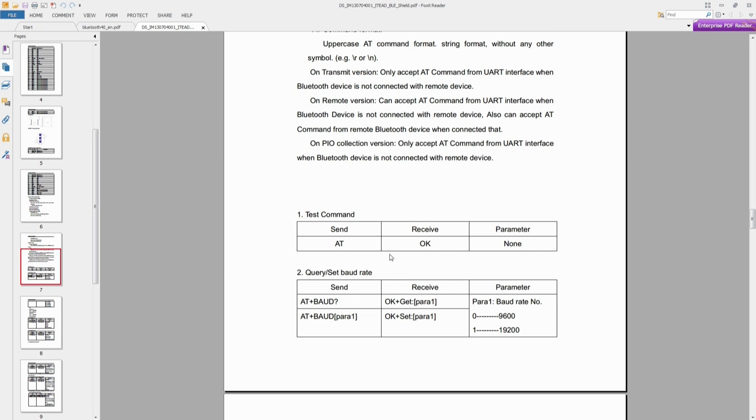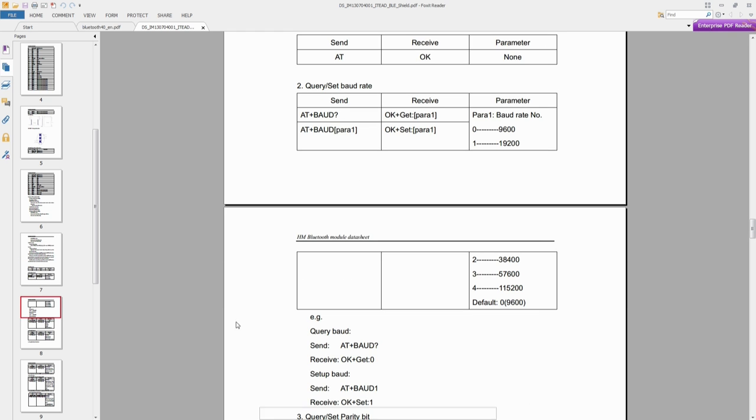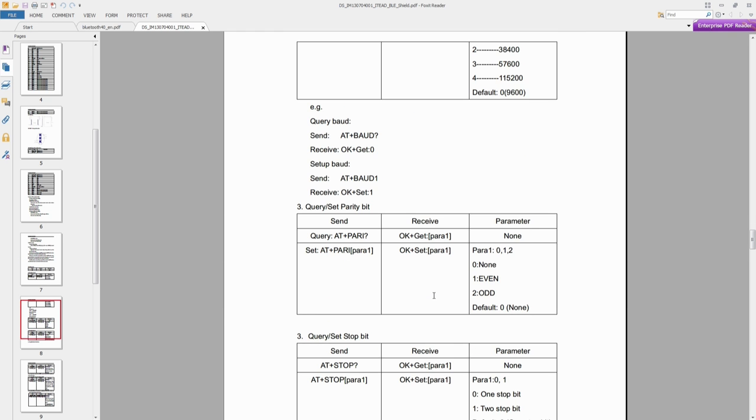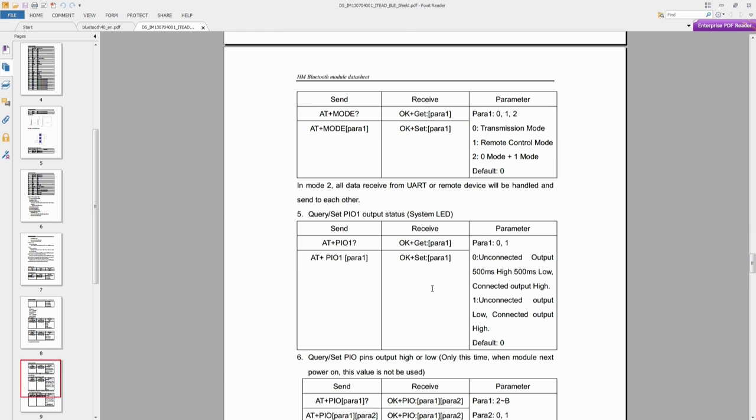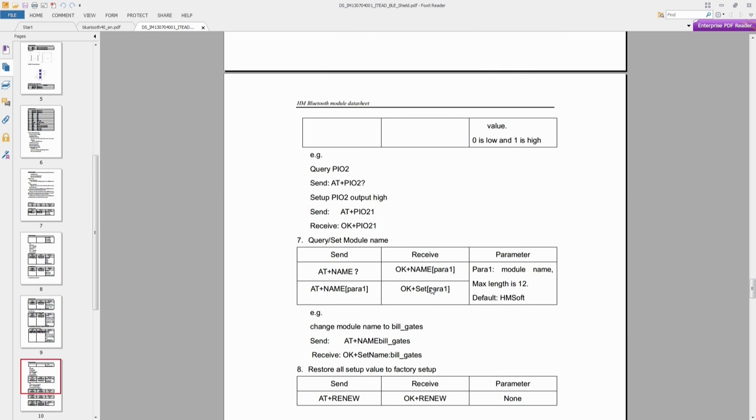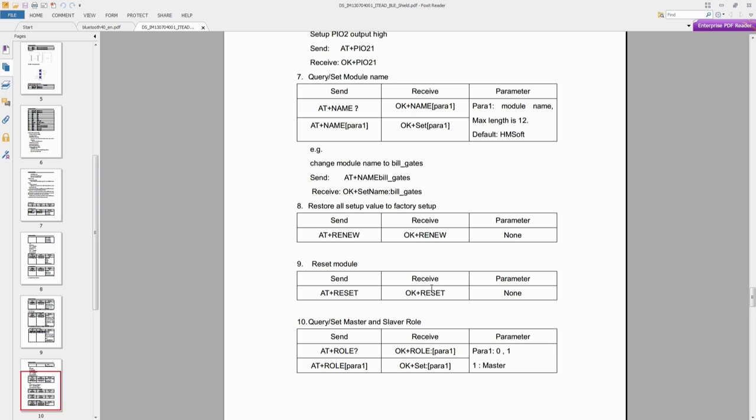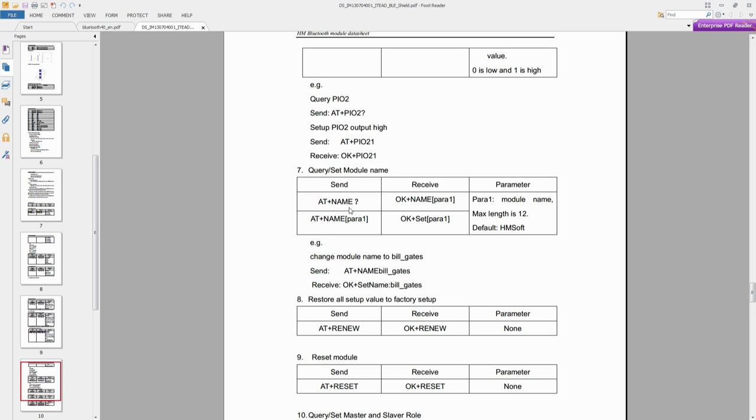We already tested the test command. Now we don't want to change the baud rate right now, parity bit as well, not stop bit. Let's check out the name of the module. So AT+NAME question mark.